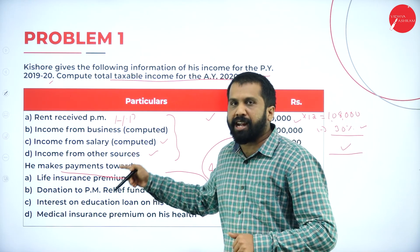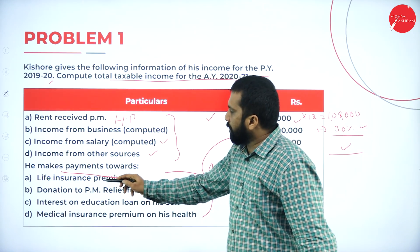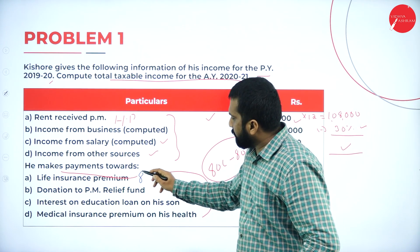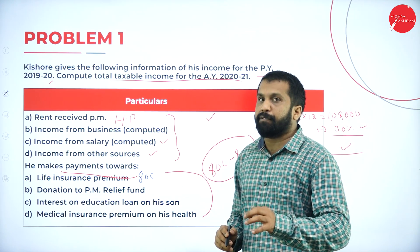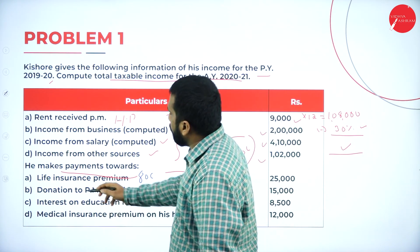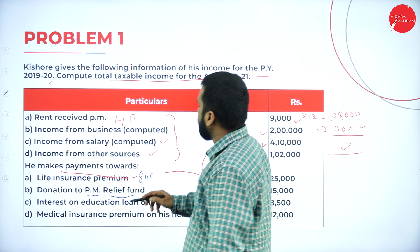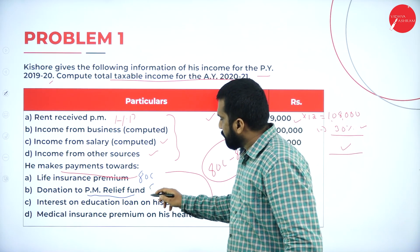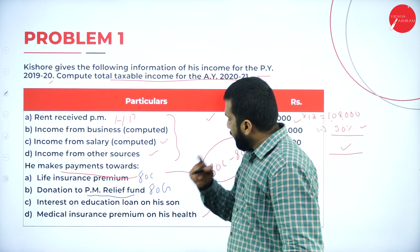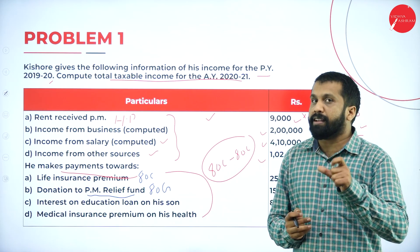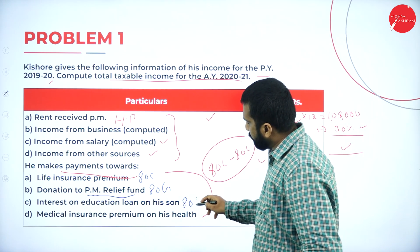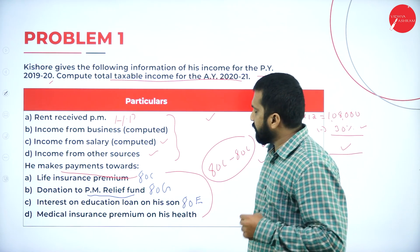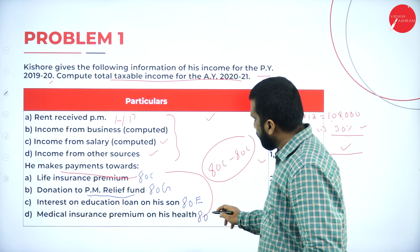Now we will go one by one through what comes under 80C, 80D, 80U — we have already done all kinds of deductions. Life insurance — any investment comes under 80C, limit up to 1,50,000, no tax. Next, donation to prime minister relief fund — donations come under 80G. Interest on education loan comes under 80E. Medical insurance premium — all medical insurance comes under 80D.